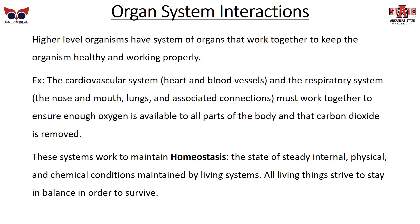Higher-level organisms have organs that work together to keep the organism healthy and working properly. Consider the cardiovascular system — the heart and blood vessels — and the respiratory system — the nose, mouth, lungs, and all the connections in between. They must work together to ensure enough oxygen is available to all parts of the body and that carbon dioxide is removed. These systems work to maintain homeostasis: the state of steady internal physical and chemical conditions maintained by a living system. For warm-blooded creatures like humans, homeostasis means maintaining a certain body temperature, and all living things strive to stay in balance to survive.